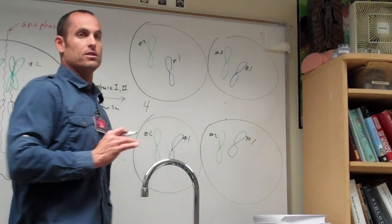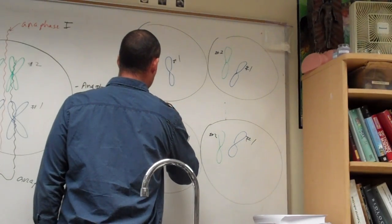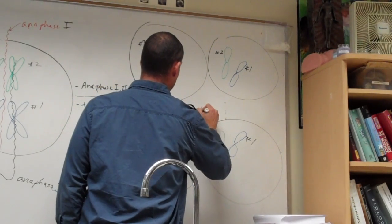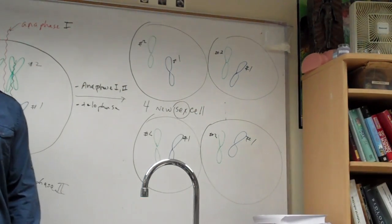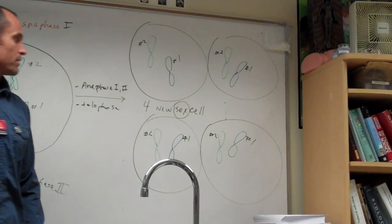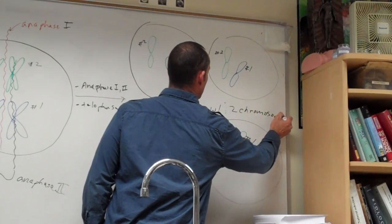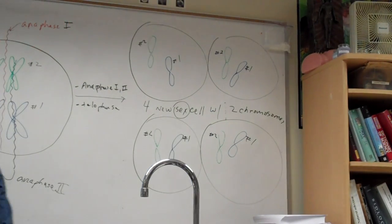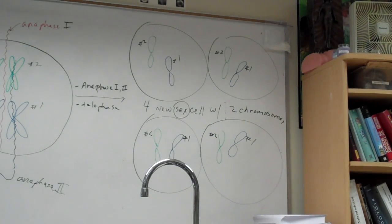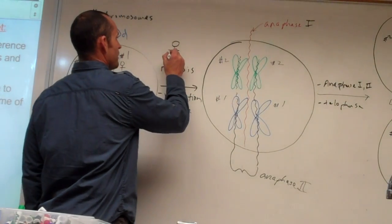Write this down: this only happens in cells in your gonads. We're going to put four new sex cells — circle the word sex. It's either going to be sperm or eggs. This is the only time this happens — when you're making sperm cells or egg cells. Each has two chromosomes, so we have half as many. The only place meiosis happens is right there.